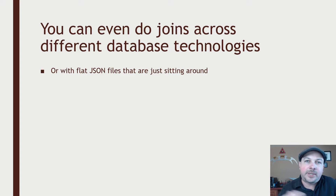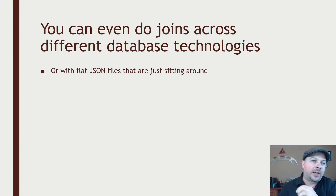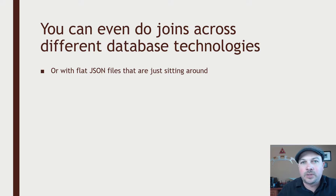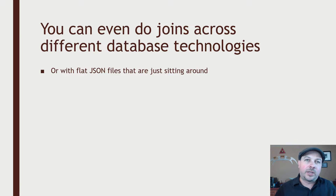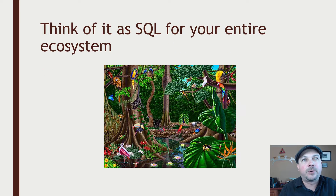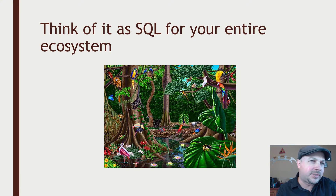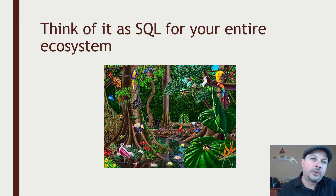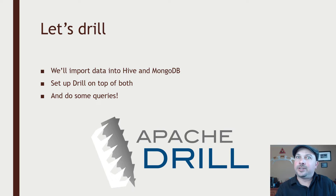You can even do joins across different database technologies or even with flat data files — joining data between your MongoDB instance, your Hive instance, your HBase instance, and some random JSON file sitting in Amazon S3. Think of it as SQL for your entire ecosystem. Whatever you're storing your data in — with some exceptions, like Cassandra not being supported yet in Drill — for a lot of data sources and places where your data might live, Drill can tie it all together for you.